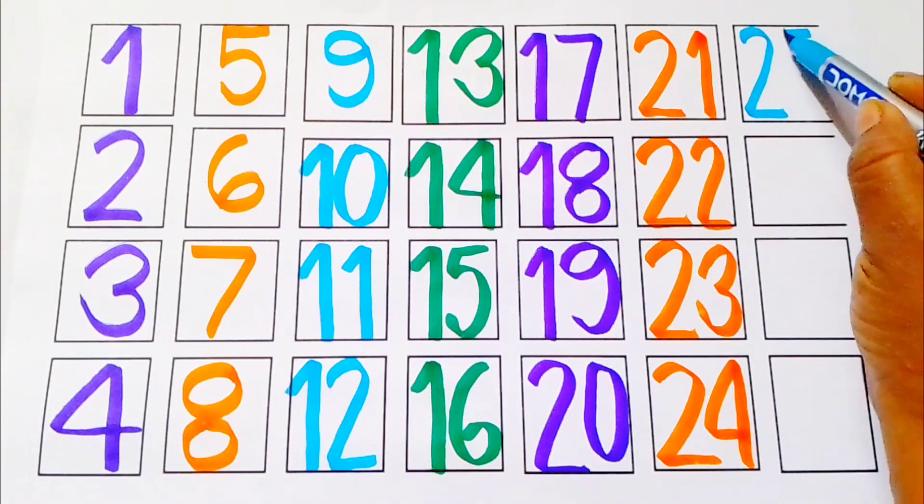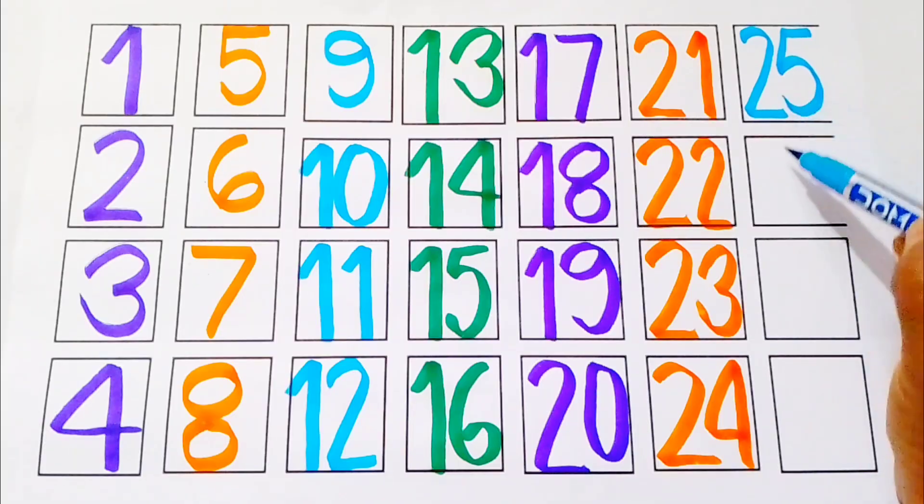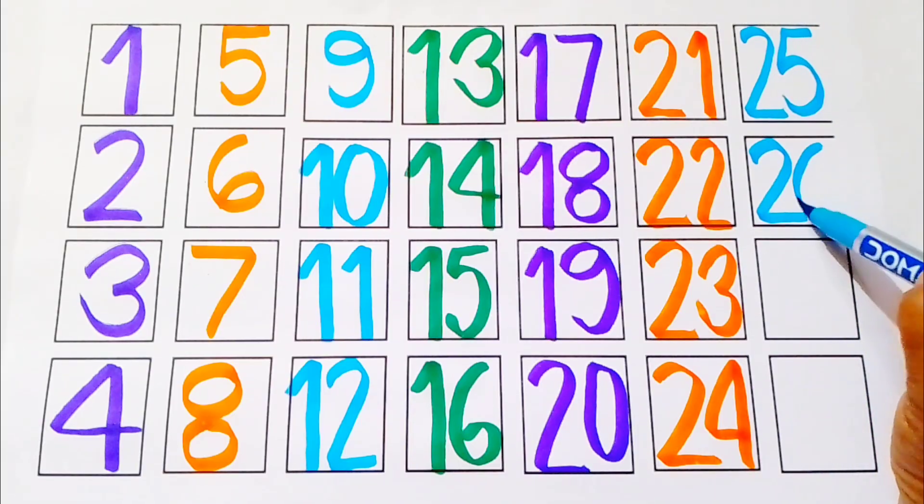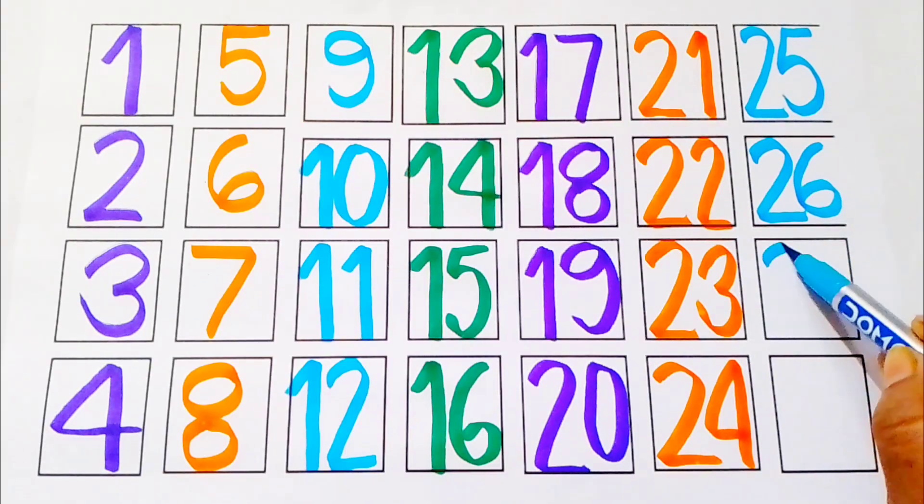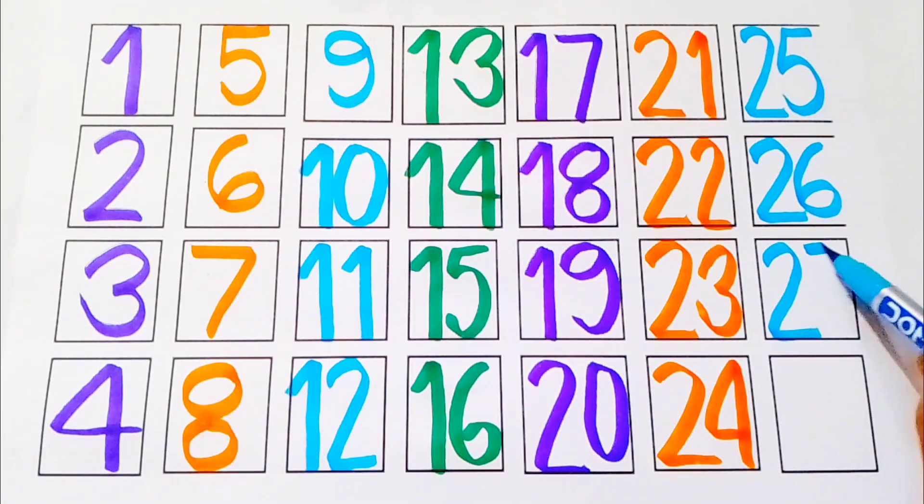Two, five. Twenty-five. Two, six. Twenty-six. Two, seven. Twenty-seven.